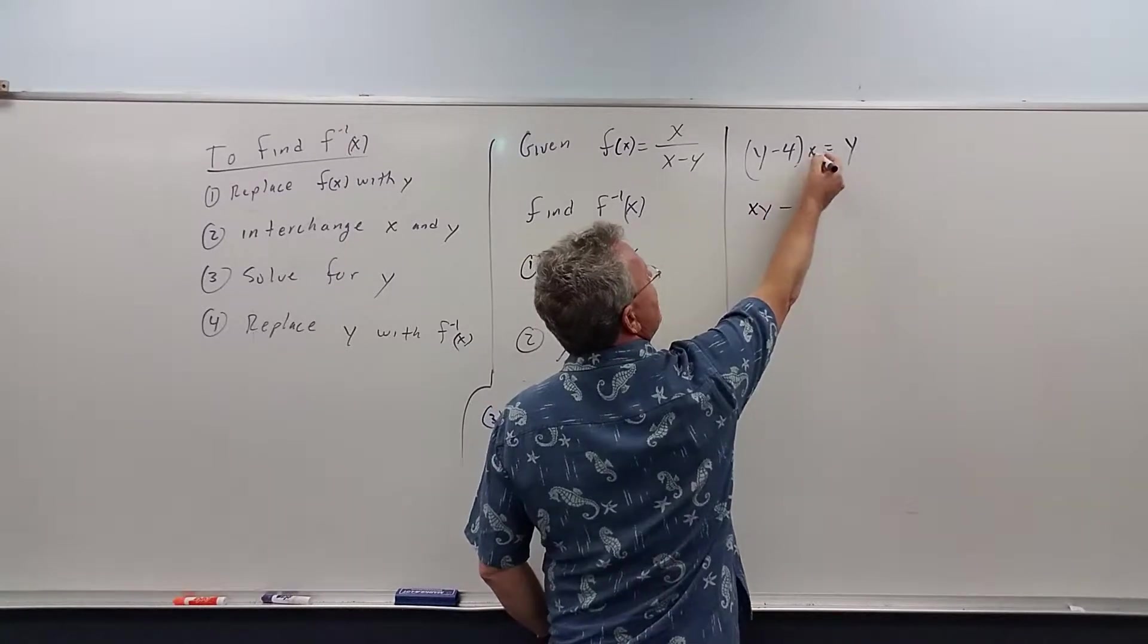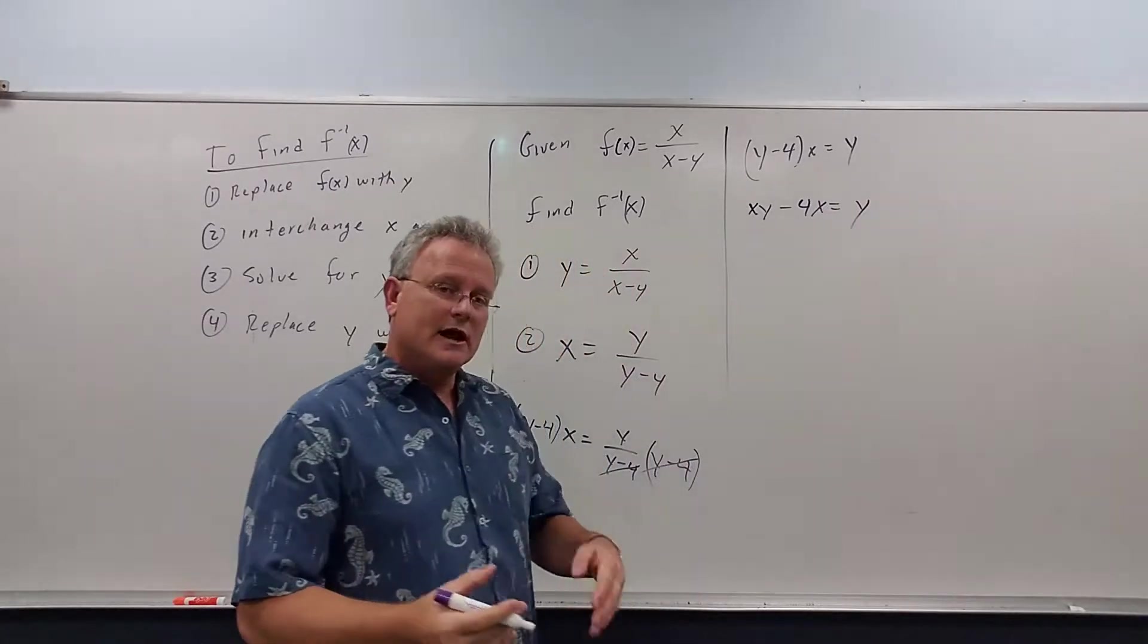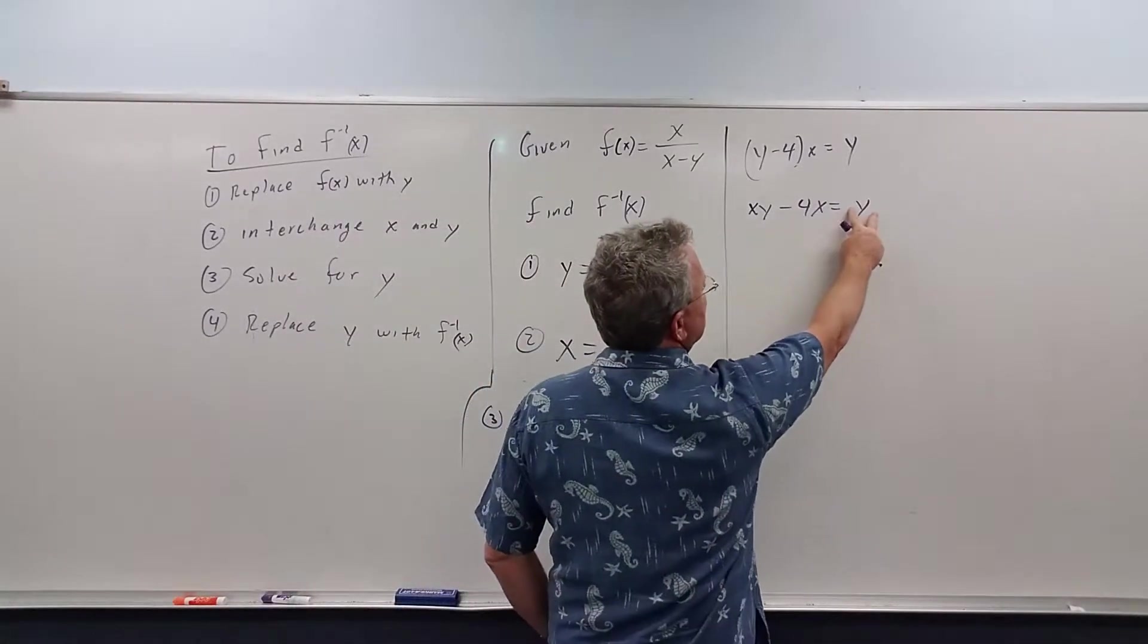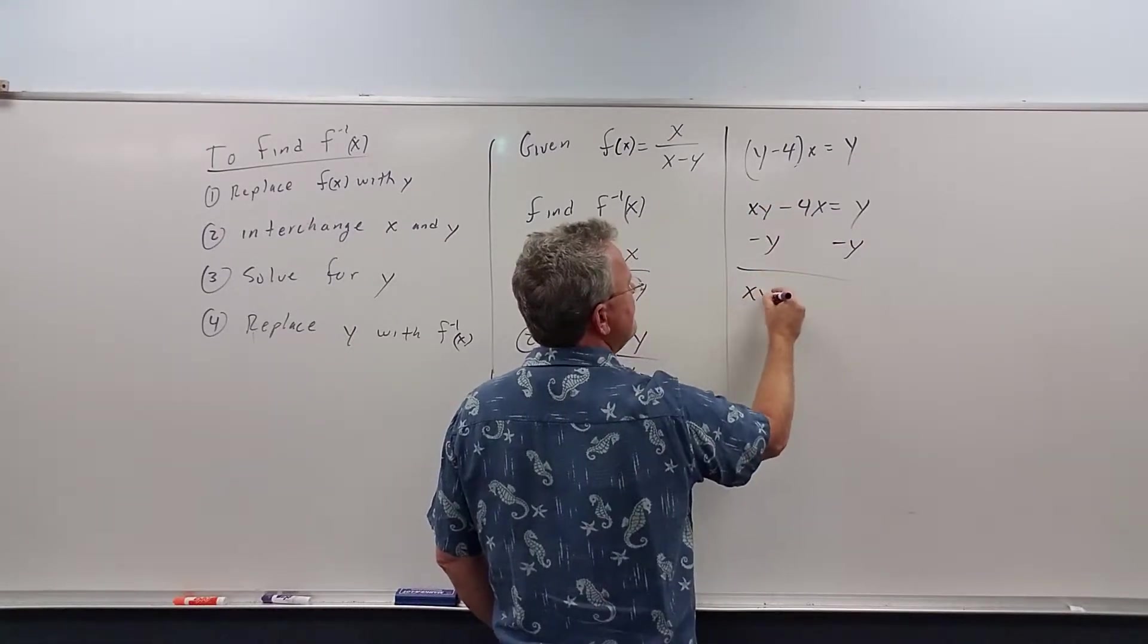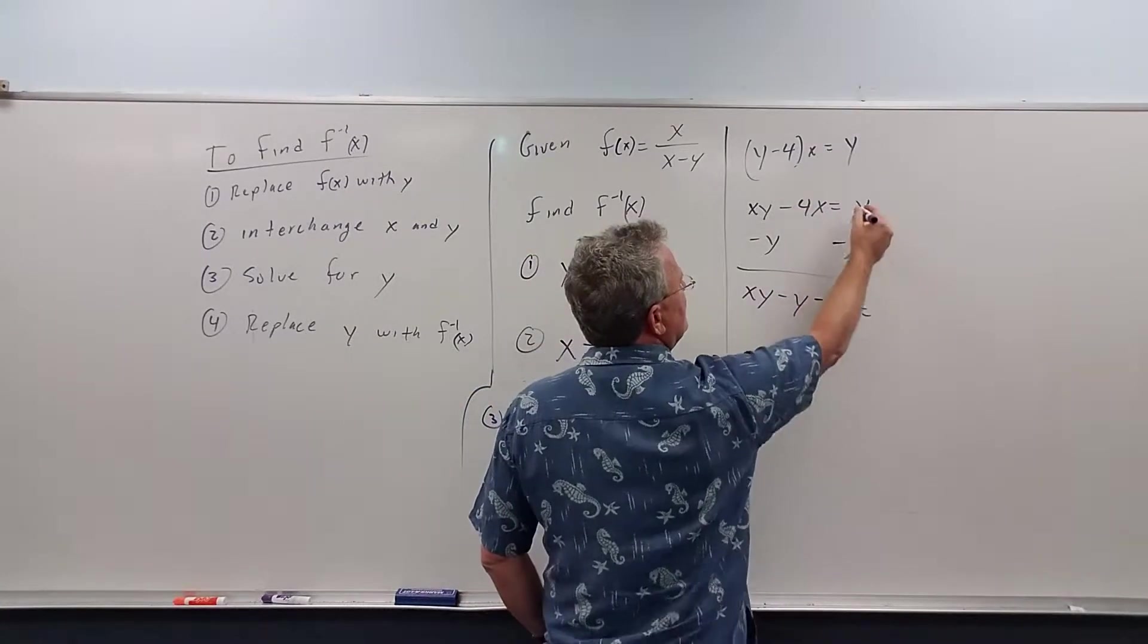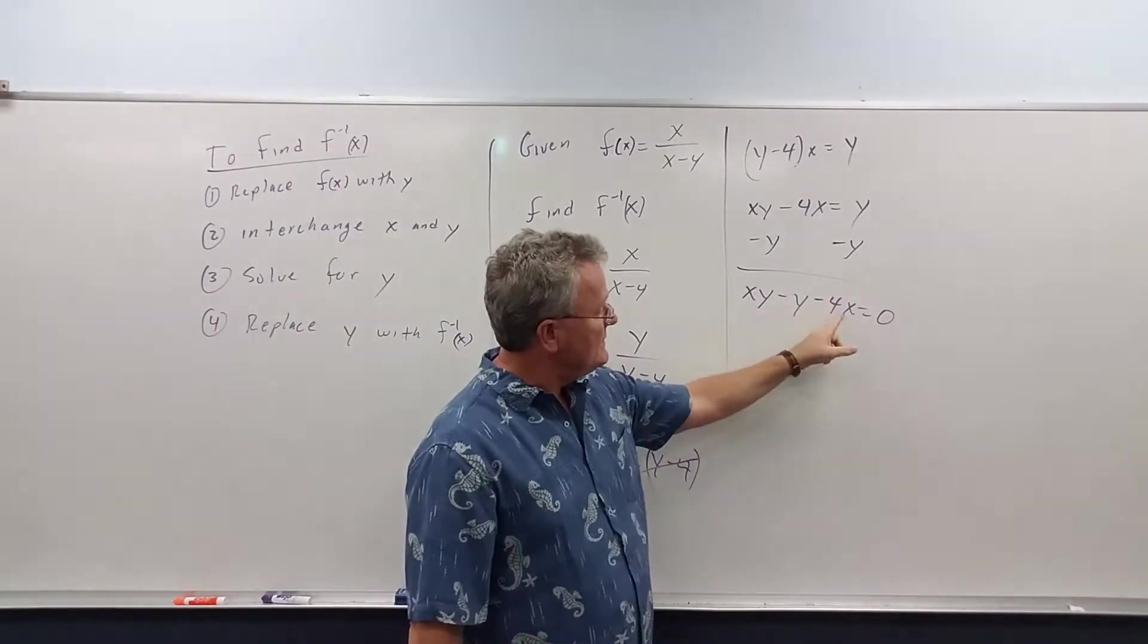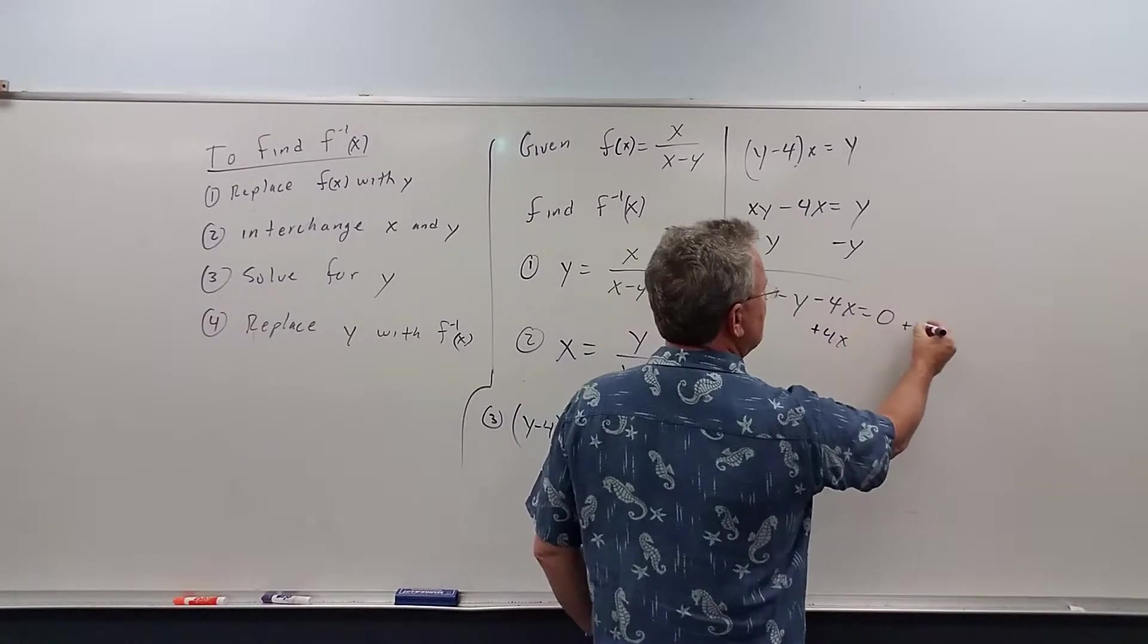So we get xy minus 4x equals y. Now, to solve for y, we want to get the y's on one side of the equation and everything else on the other side. So let me move this y over here by subtracting y. We get xy minus y minus 4x equals y minus y, which is 0.